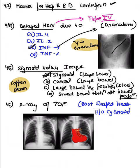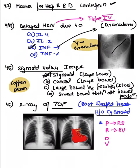A boot-shaped heart image with a typical history of cyanosis — that is Tetralogy of Fallot. Mnemonic 'PROV': P for pulmonary stenosis, R for right ventricular hypertrophy, O for overriding of aorta, V for ventricular septal defect.